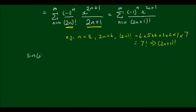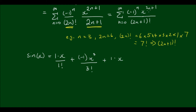Now let's write this out with just the first few terms. Sine x equals: for n=0, negative 1 to the 0 is 1, times x to the power of 1, divided by 1 factorial, which is just 1. Then for n=1, negative 1 to the 1 is negative 1, times x to the power of 3, divided by 3 factorial. Then plus x to the 5th over 5 factorial, and for n=3, negative 1 to the 3 is negative 1, times x to the 7th over 7 factorial, and so on.